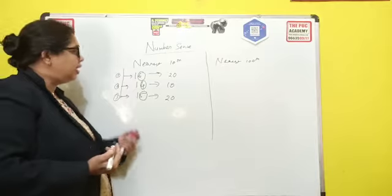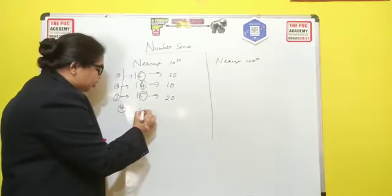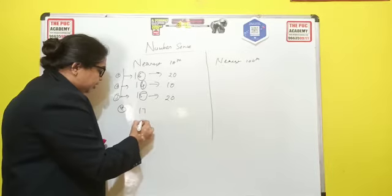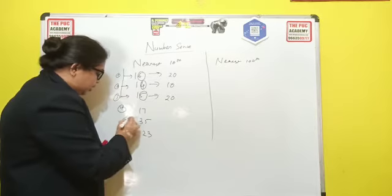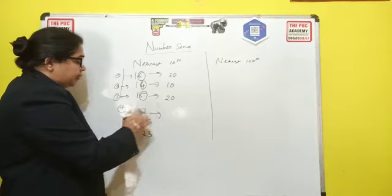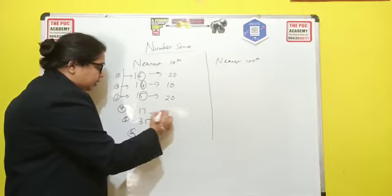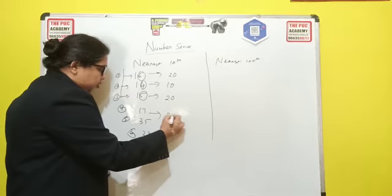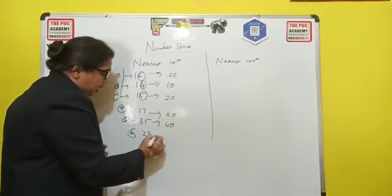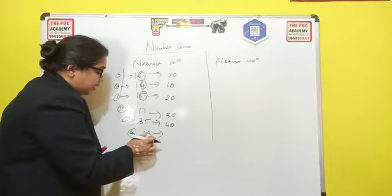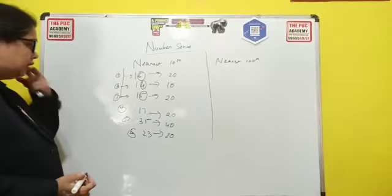Similarly, try another example: 17, 35, and 23. For 17, on the unit place the number is 7, which is bigger than 5, so it will round up to the next ten, that is 20. For 35, on the unit place the number is bigger than 5, so it will come as 40. And for 23, the number on the unit place is less than 5, so it will come as 20.